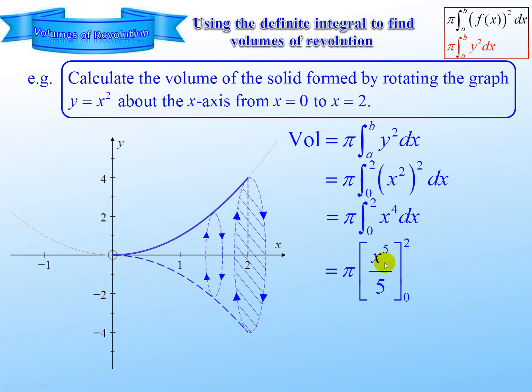Substitute 2, subtract, substitute 0. And that works out as 32 pi over 5.